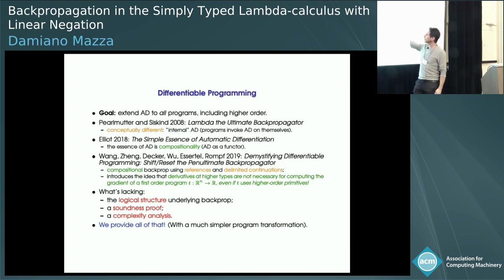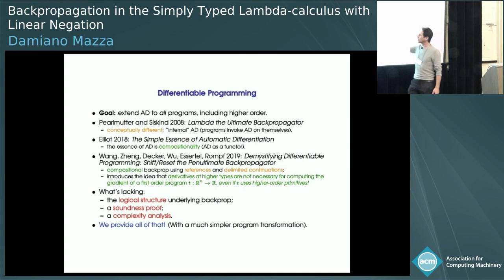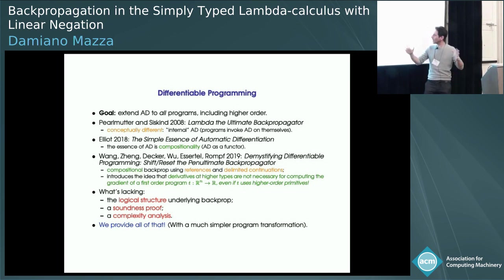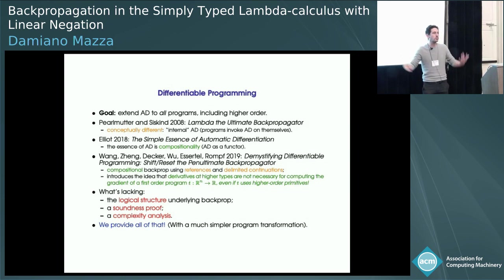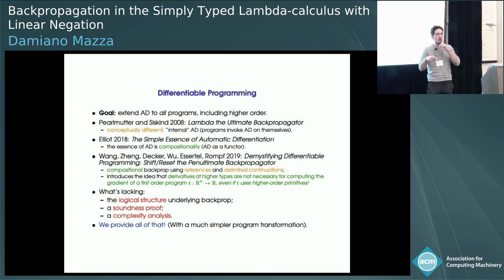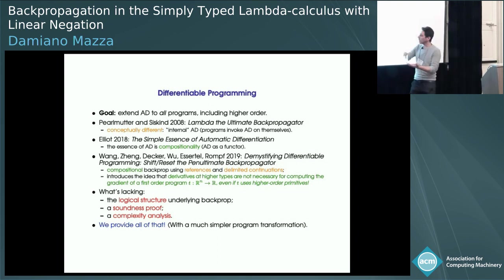The very first paper to do something like this is by Perlmutter and Siskind, from about 12 years ago. It's actually very different conceptually from what people have been doing more recently, when interest in all these things has bloomed. They do something different: as I presented, this transformation is something external to the program — you have a program input and output — whereas they want the program to apply AD to pieces of itself, more in the spirit of Gordon Plotkin's talk.